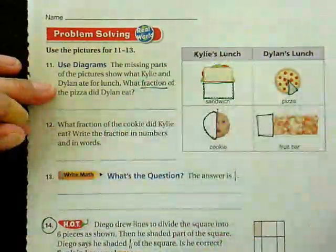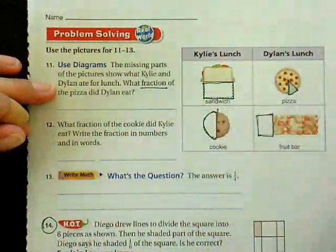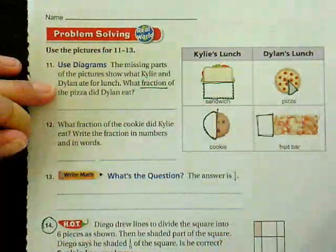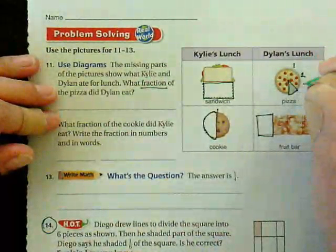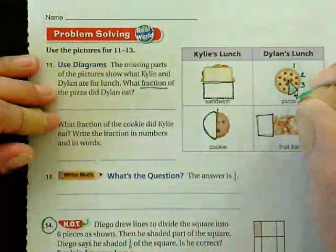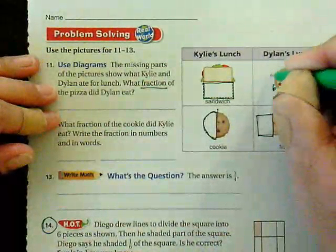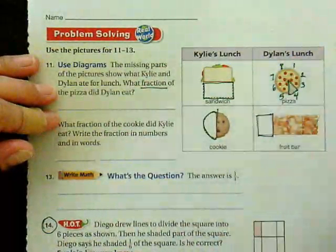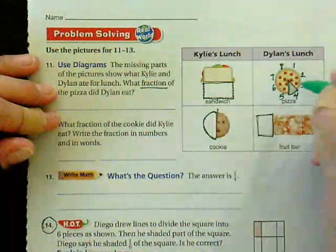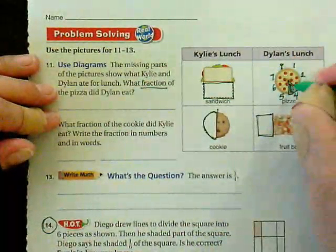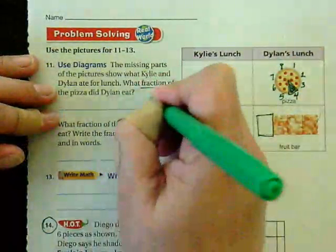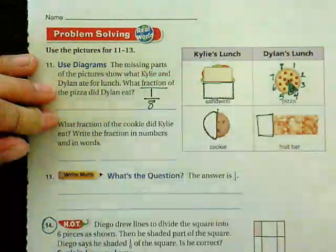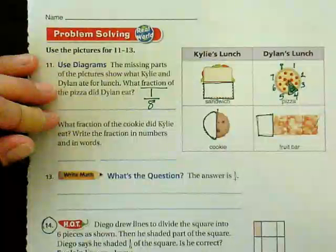What's the first thing that I need to do? Well, I need to know how many slices are in that pizza. So I'm going to number them: one, two, three, four, five, six, seven, eight slices of pizza, and he ate this one. So my bottom number is eight, my top number is one. Dylan ate one-eighth of the pizza.